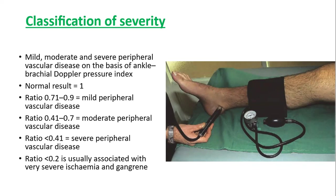If the ankle-brachial index is less than 0.2, it represents severe ischemia and will definitely lead to gangrene.